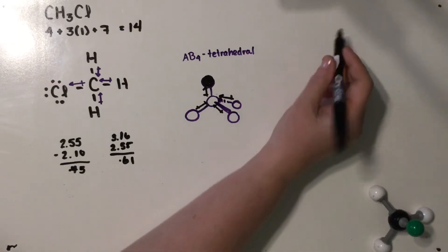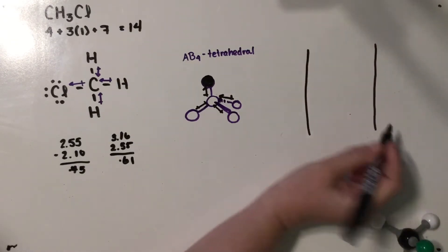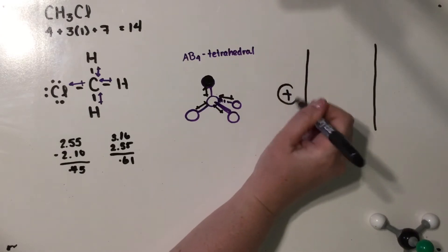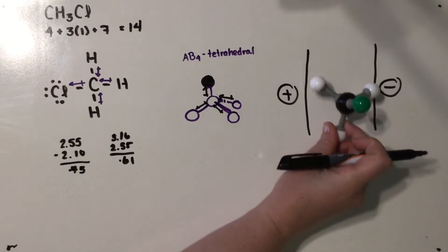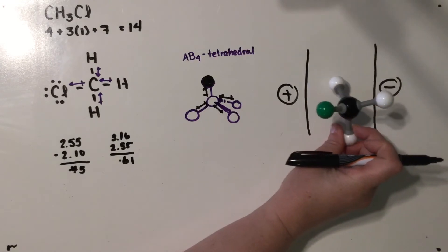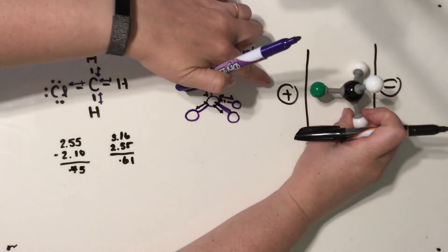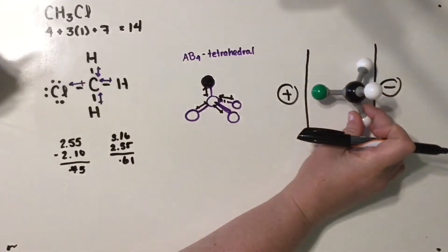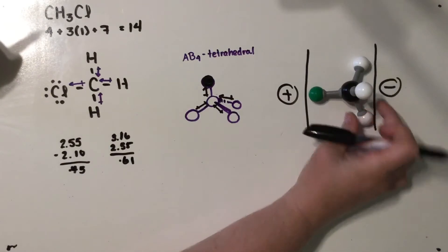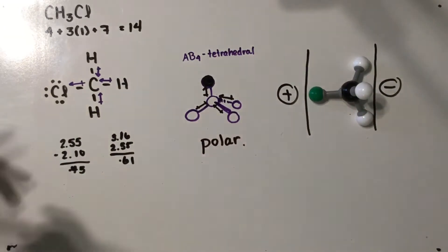If we think about it in terms of a positive plate here and a negative plate here, if we put this molecule within the electric field, it would want to rotate itself so that the negative end is close to the positive side and the more positive end is close to the negative side. And because we would have that shift, this would be a polar molecule. Hopefully that makes sense.